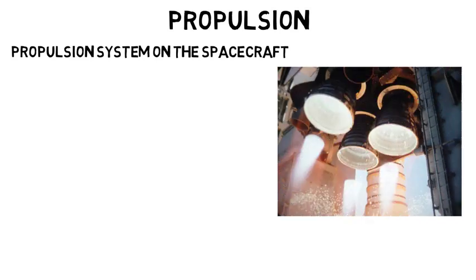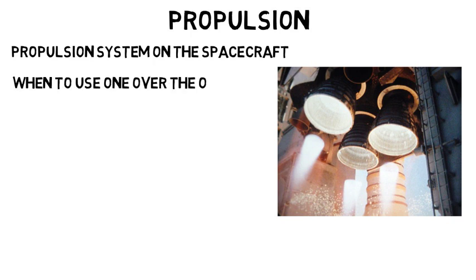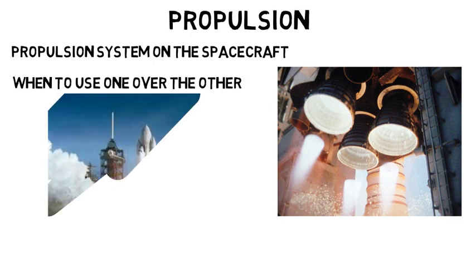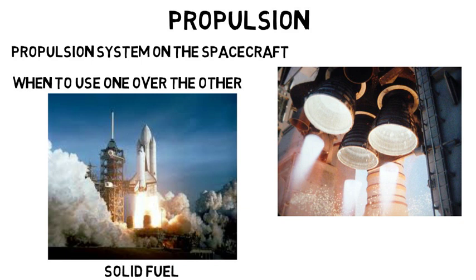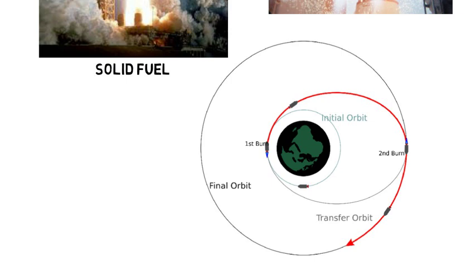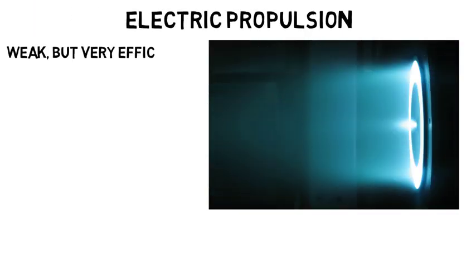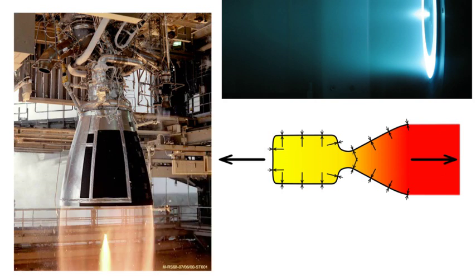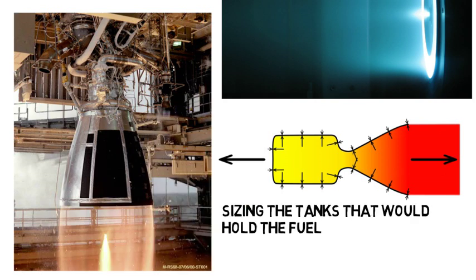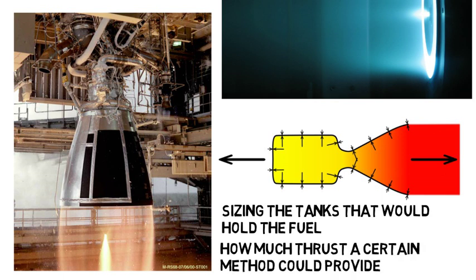Propulsion has to do with the propulsion system on the spacecraft that provides the thrust. There aren't too many propulsion methods, but it's all about knowing when to use one over the other and accounting for all the little details. For example, launching a rocket uses a solid fuel, kind of like gunpowder, which is a powerful type of propulsion to overcome gravity. But if the spacecraft is in orbit and needs to change to a different orbit, you need to determine what propulsion and how much is needed to provide the change in velocity. In deep space, one method you could use is electric propulsion, which is weak but very efficient. Other details include shaping and determining the material for the nozzle, sizing the tanks that hold the fuel, and figuring out how much thrust a certain method can provide.